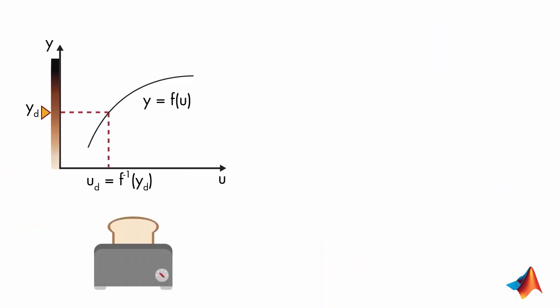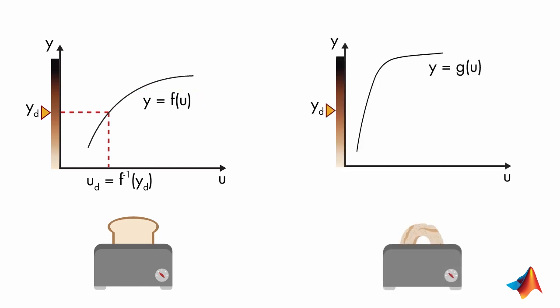Let's also look at the mathematical interpretation of this. Through experiments, you found the function f that determines the relationship between time and color. But now that you use a different type of bread, this relationship is not represented by f anymore but another function g.